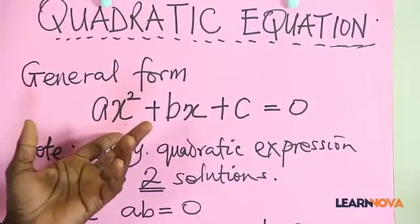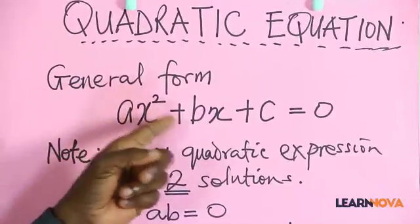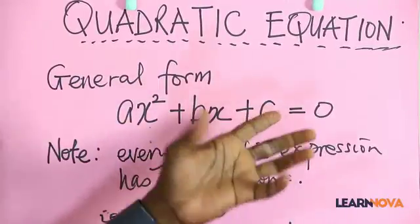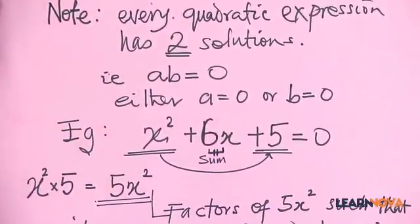I would like to note that the general form of quadratic equation is written as ax squared plus bx plus c equal to 0. In the course of this lesson, we will be delving into the formula method, which is actually derived from the general form. I'd like you to note here that every quadratic expression has two solutions.